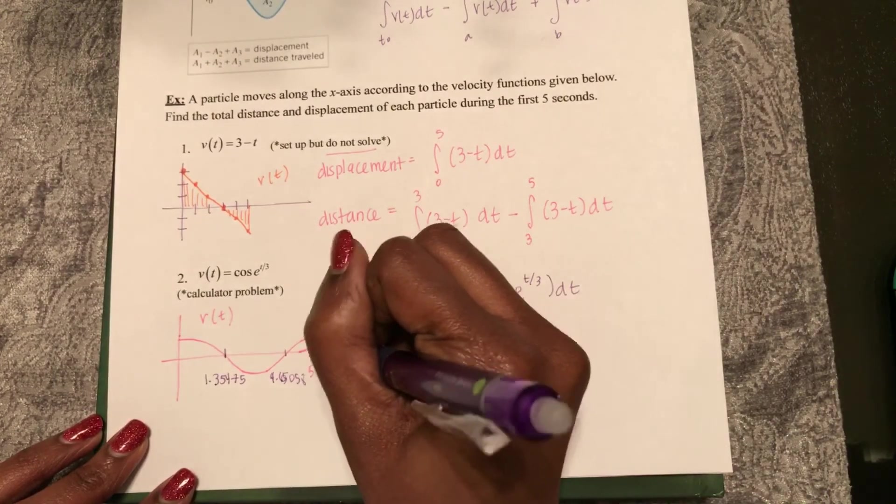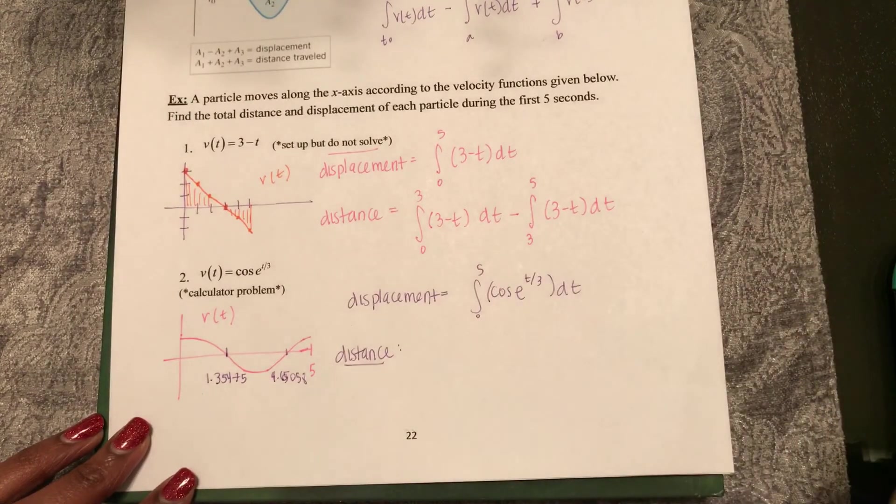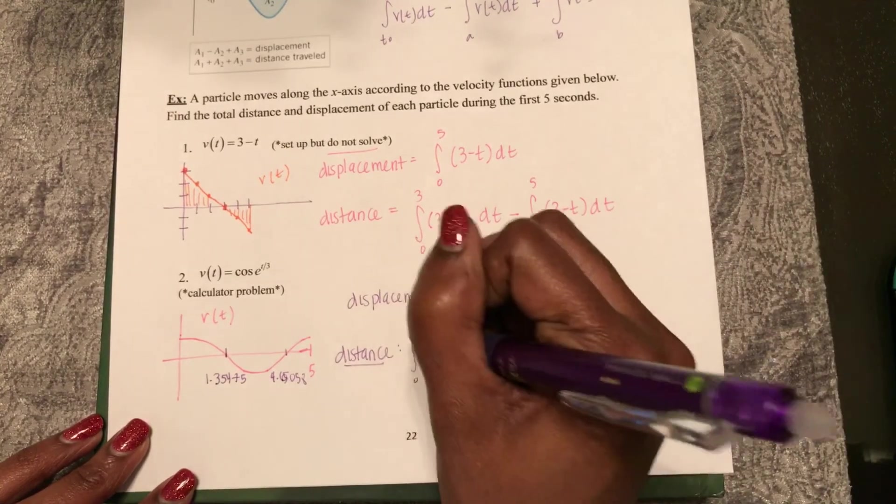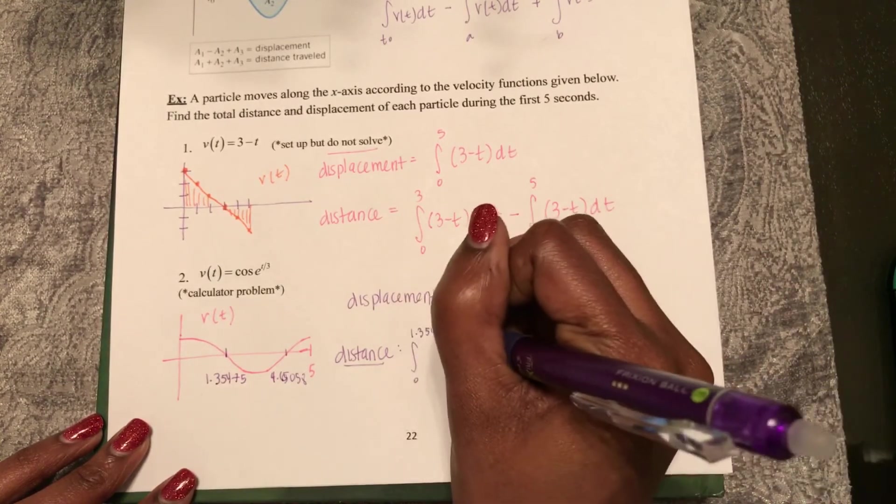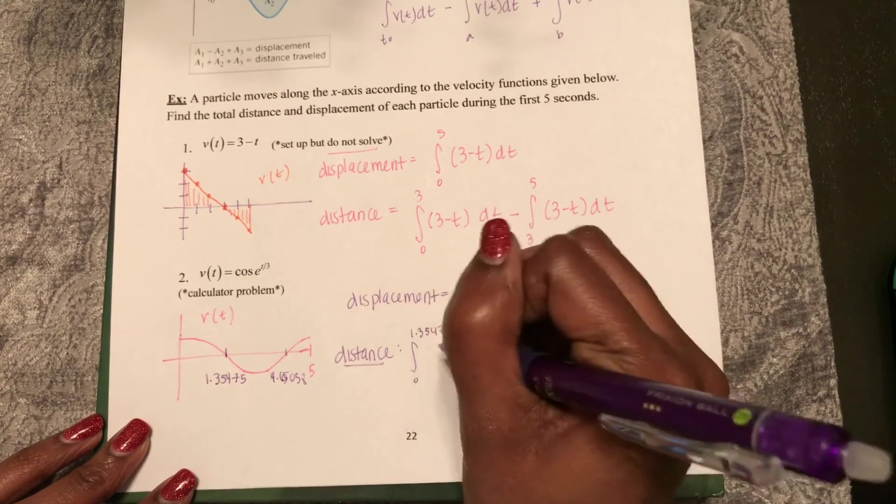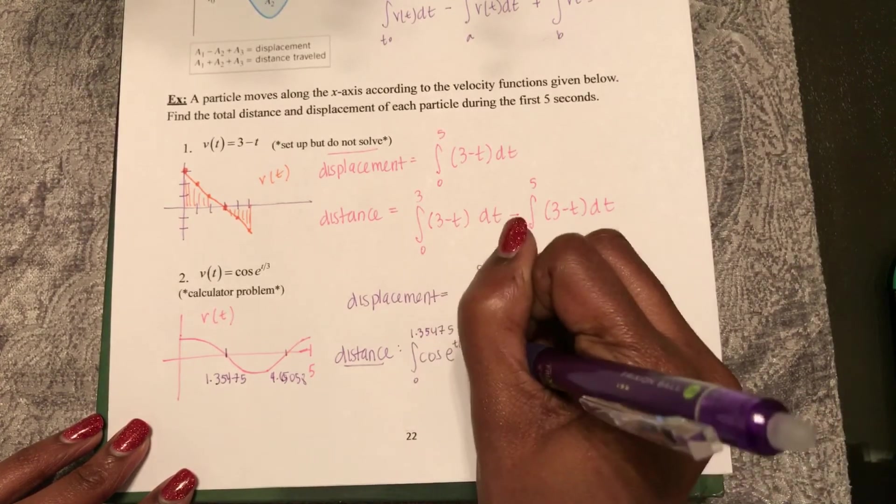Now distance, we need to break it up into positive and negative. So first it's the integral from 0 to 1.35475 of cosine e to the t over 3 dt.